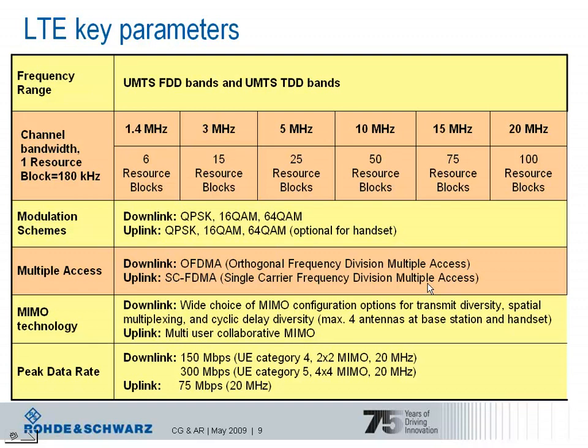LTE supports MIMO technology. MIMO — multiple input multiple output — antenna technology is very essential for LTE in order to support the high data rate and throughput requirements. In the downlink, a wide choice of MIMO configurations is possible, with different MIMO modes supported, for example transmit diversity, spatial multiplexing, and cyclic delay diversity.